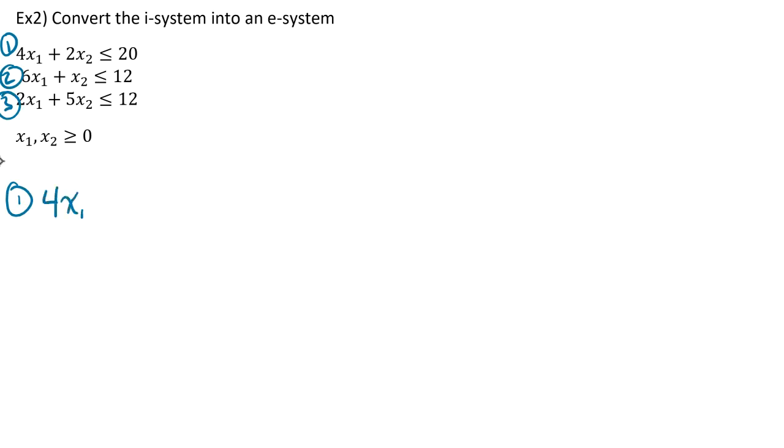So we have 4x1 plus 2x2 plus s1 equals 20. Next up, for the second one, we have 6x1 plus x2 plus s2, because we're in the second equation now, have to have a different slack variable, equals 12.